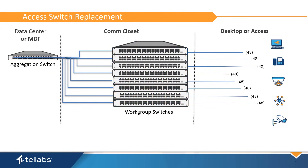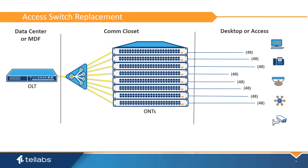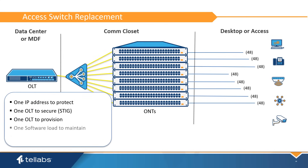Closet-based switch replacement is an efficient brownfield deployment of PON. Closet-based workgroup switches can be replaced by new 48-port ONTs. ONTs are powered, mounted, and cabled the same way as the workgroup switch. PoE and uni-port capabilities are the same, copper is reused, and in many cases fiber is reused. In comparing active Ethernet solutions to optical LAN, consider that optical LAN has only one IP address to protect, one OLT to secure, one Layer 2 switch to provision, one software load to maintain, and one OLT console port to secure.